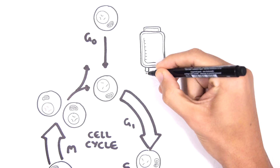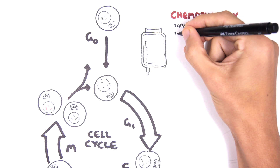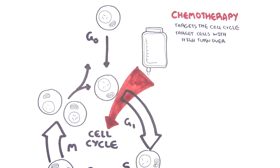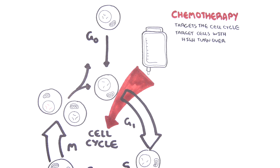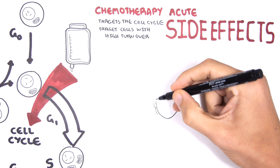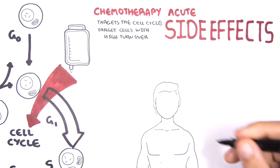Chemotherapy drugs target different phases of the cell cycle, and because of this they also target cells that have a high turnover — cells that enter the cell cycle more frequently. These include skin cells, the lining of the mucosa, and blood cells from the bone marrow. Because of this, chemotherapy drugs have very important side effects to keep note of.